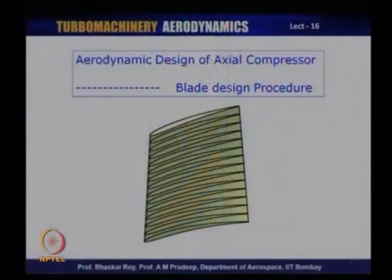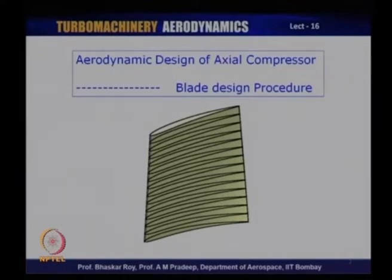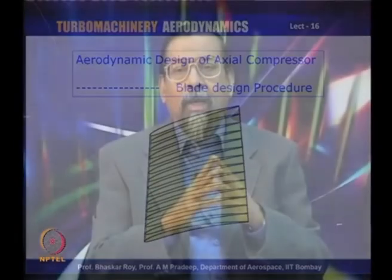If you look at the blade, you would typically see that they are made up of a number of aerofoil sections which have been stacked up to create a blade. These aerofoil sections from root to tip are made up of different aerofoil sections. The aerofoil required at the root would be of a higher camber; the aerofoil required at the tip would be of a much lower camber. In a modern axial flow compressor, it is entirely possible — and indeed necessary — that you have different aerofoils.